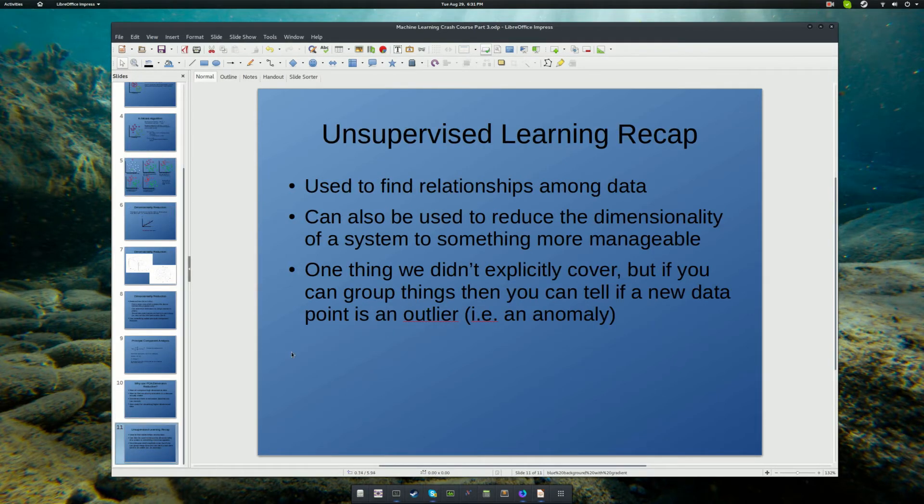Just to quickly recap, unsupervised learning is great when you don't have ground truth labels, but you want to find relationships among your data. You can also use it to reduce the dimensionality of a system to something that is more manageable or useful to you. And something we didn't explicitly cover. But since you're able to group things, it makes sense that if you're given a new data point that you believe should belong to one group or the other, you can tell if it's outside of the normal distribution. In other words, it's anomalous.